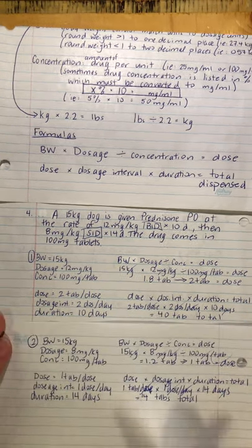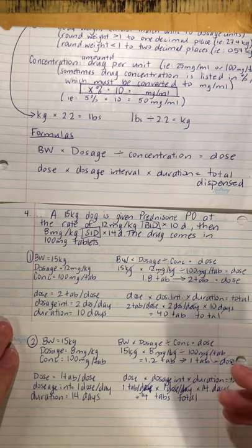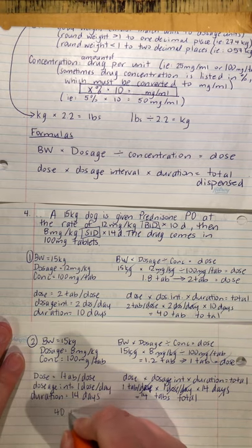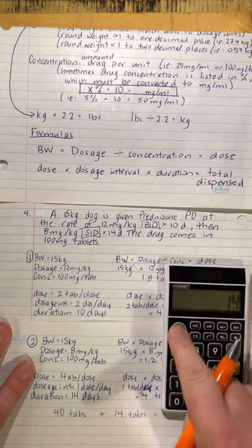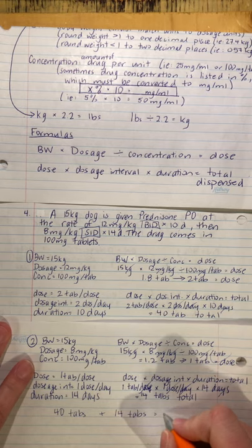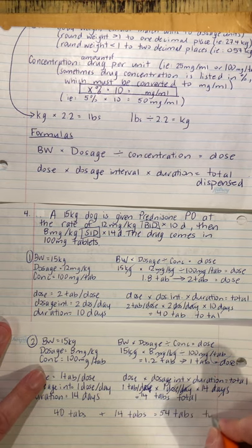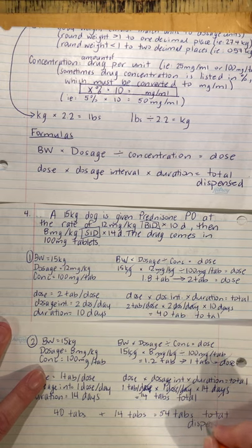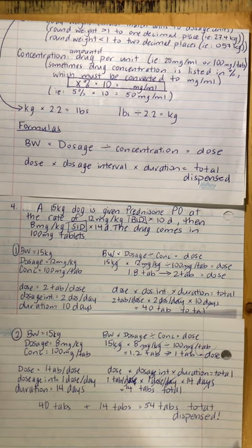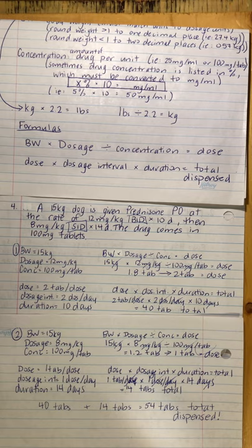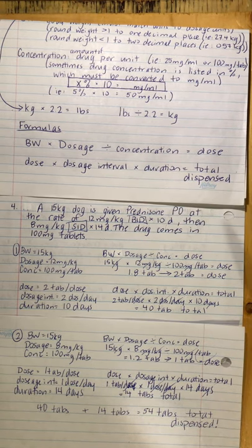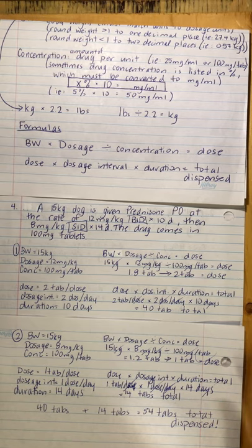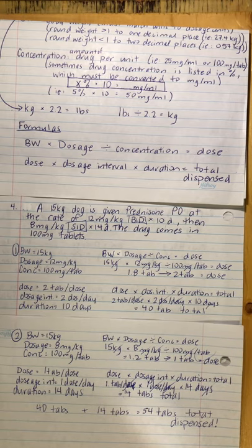Is 14 tablets the final total? Still not. I need to add phase one and phase two together: 40 tabs plus 14 tabs equals 54 tablets total dispensed. Sometimes doctors do a big taper and you might have to add up four steps or more, but this one only has two.